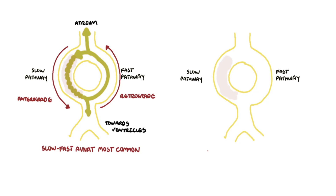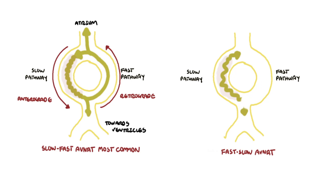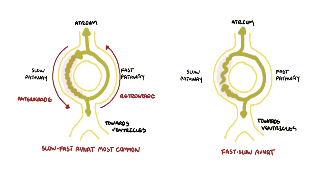Then there is also fast-slow AVNRT, which represents approximately five to ten percent of AVNRTs. Here there is anterograde conduction by the fast atrioventricular nodal pathway and retrograde conduction by the slow atrioventricular nodal pathway.